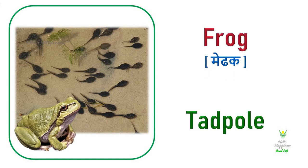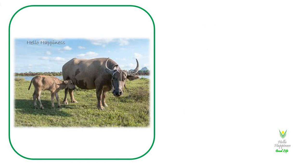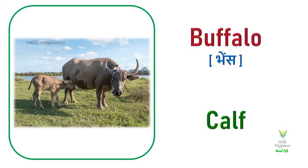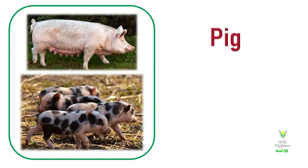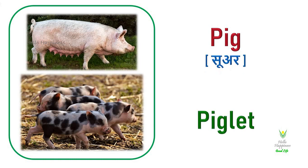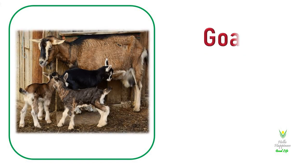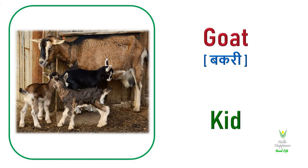Frog. Frog's young one is called a Tadpole. Buffalo. Buffalo's young one is called a Calf. Pig. Pig's young one is called a Piglet. Goat. Goat's young one is called a Kid.